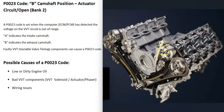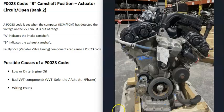Engines with dual overhead cams are going to have two cams on each bank of the engine. Camshaft A is going to be on the intake side, and camshaft B is going to be on the exhaust side.